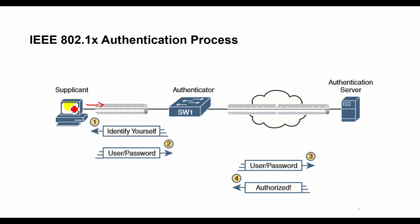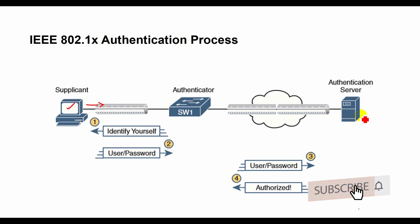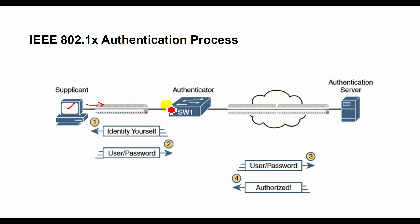The access point sends a request identity message, and the client sends a message with its identity. The client's response packet with its identity is proxied to the authentication server by the authenticator. The authentication server challenges the client to prove itself and may send its own credentials to prove itself to the client. The authentication server then accepts or rejects the client's request for connection. If the end user is accepted, the authenticator changes the virtual port to an authorized state, allowing full network access to that end user.